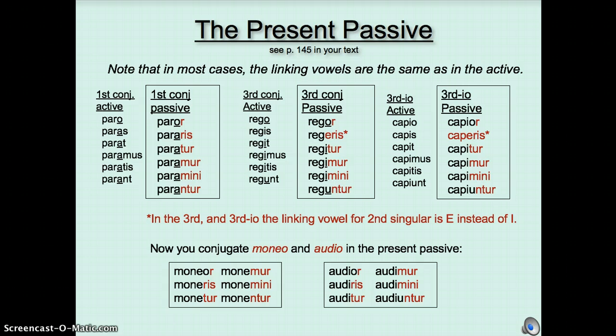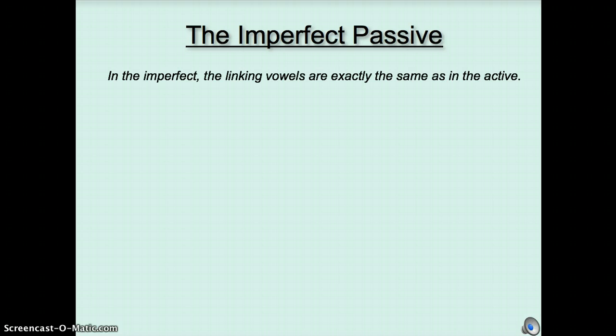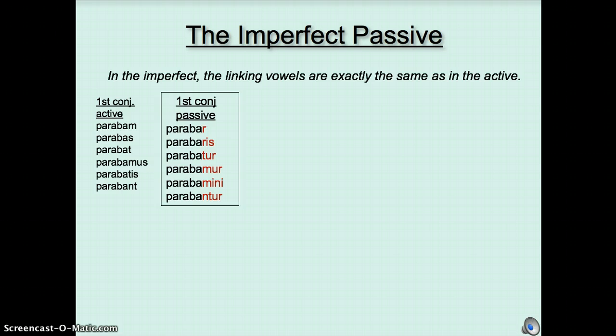Now let's move on to the imperfect passive. In the imperfect, the linking vowels are always exactly the same as in the active. So where we had parabam, parabas, parabat, parabamus, parabatis, parabant, we have the A as the linking vowel, and then the BA is the tense indicator. We take off our active endings, put on our passive ones, and we get parabar, parabaris, parabatur, parabamur, parabamini, parabantur.